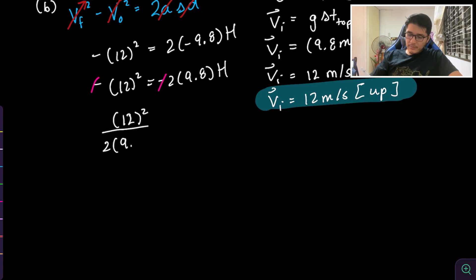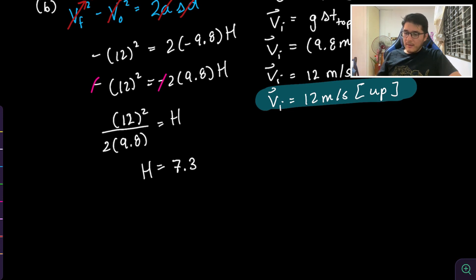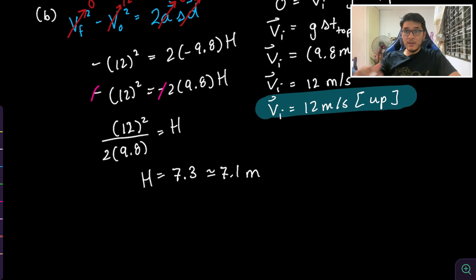This gives H = 12² ÷ (2 × 9.8), which is approximately 7.3 meters. If you kept the unrounded value of 11.76 m/s for initial velocity, you get approximately 7.1 meters — both are correct depending on rounding. Your teacher should accept either. That's how we solve this question; stick around for more challenging ones — hit subscribe and check the playlist.